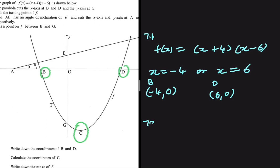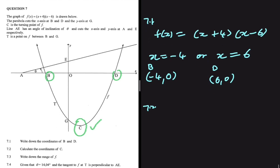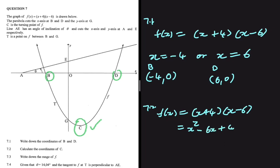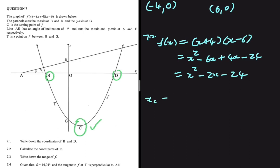Let's look at 7.2: calculate the coordinates of C. C is the turning point of f(x). We are given f(x) = (x + 4)(x - 6). Let's multiply out — we get x² - 6x + 4x - 24, which simplifies to x² - 2x - 24. To find the x-value of C, we use -b divided by 2a.